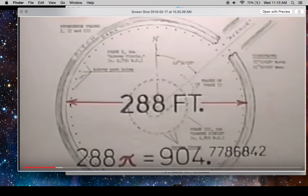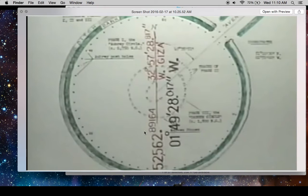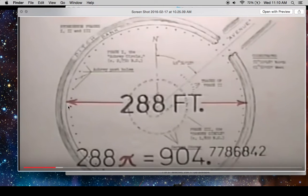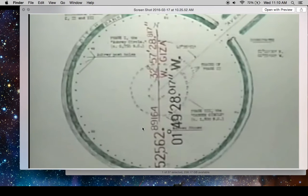So if we take Stonehenge once again, it's 288 feet across, including this outer rim. So let's take 288 times pi. You get 904.778. And then multiply that by 15. You get 13571.680. And then multiply that by the square root of 15. You get 52562. I know that's a lot of math, but look at what it comes out to. The exact grid longitude of Stonehenge.